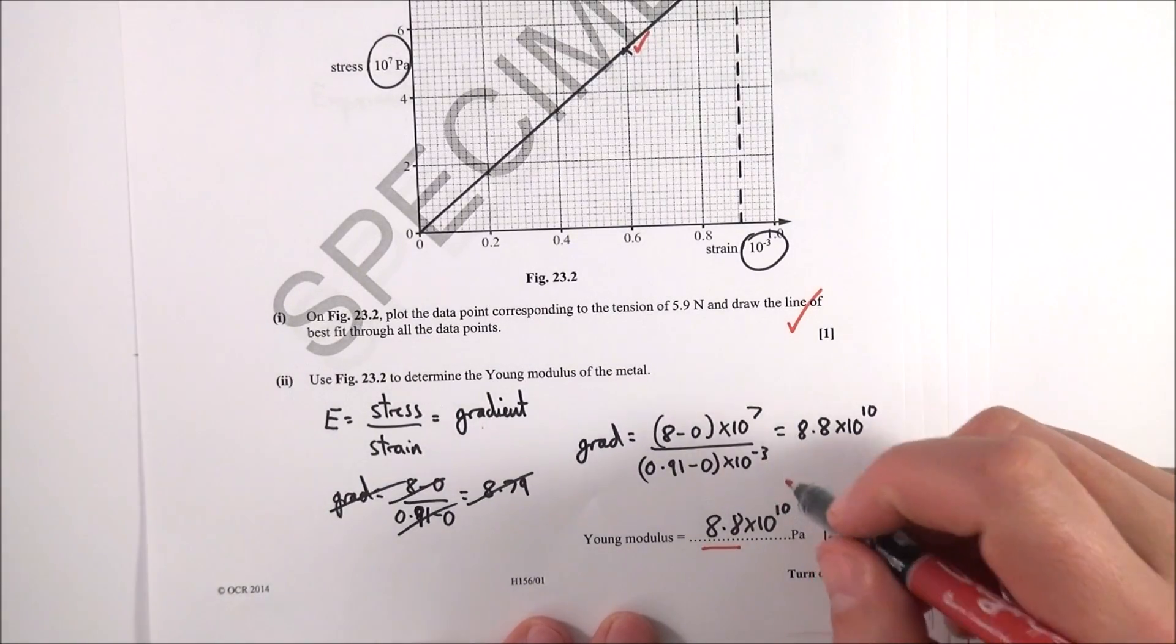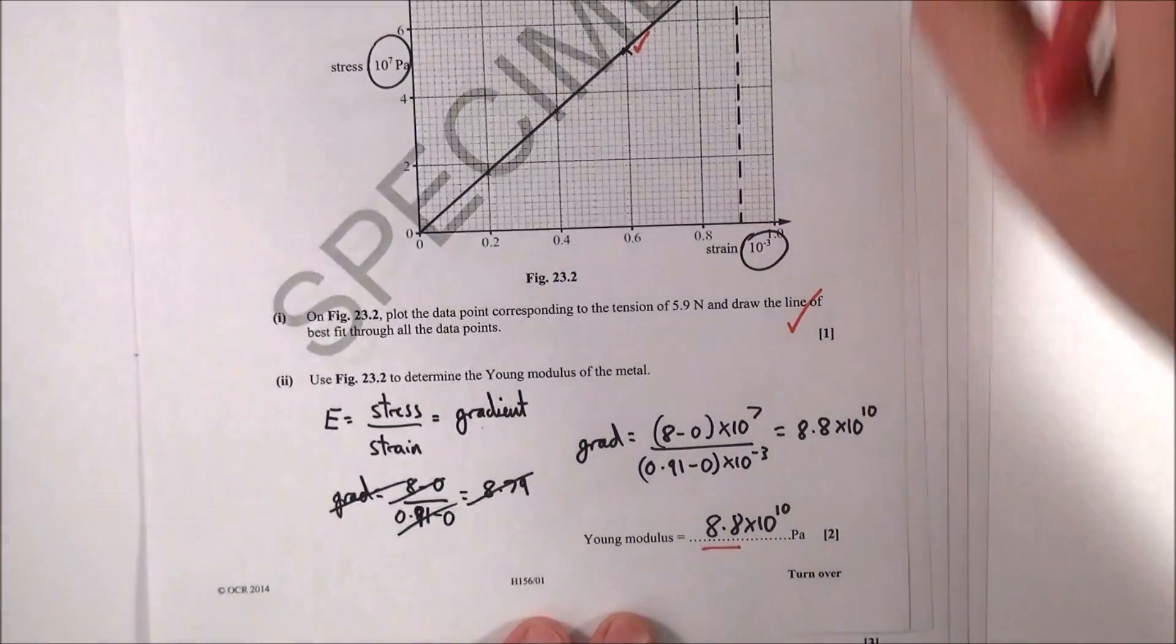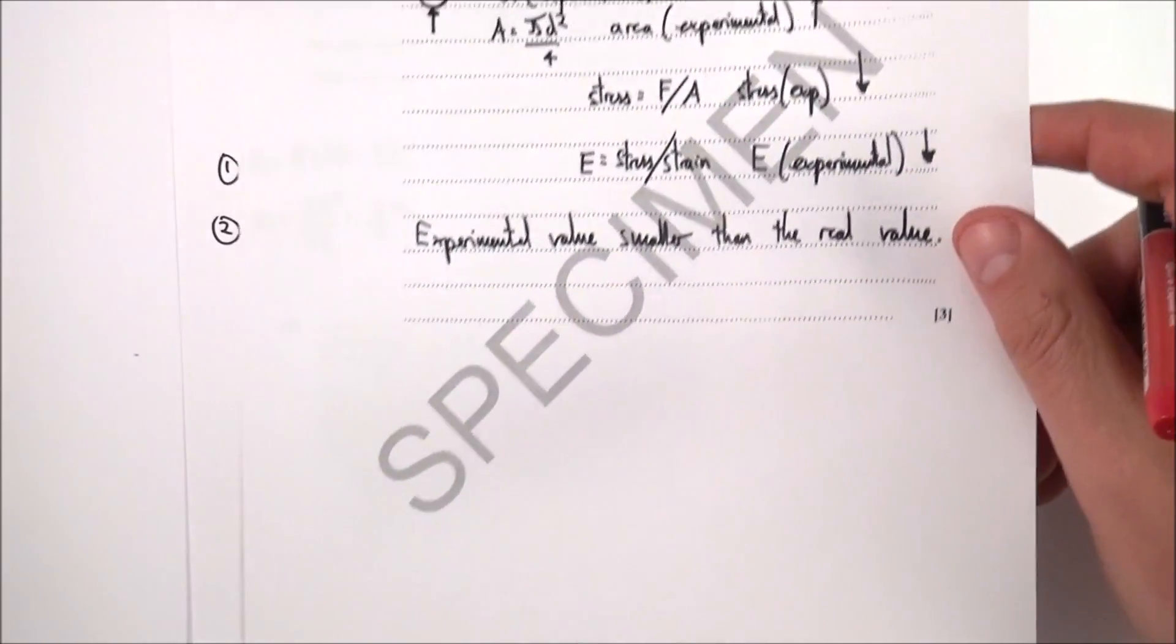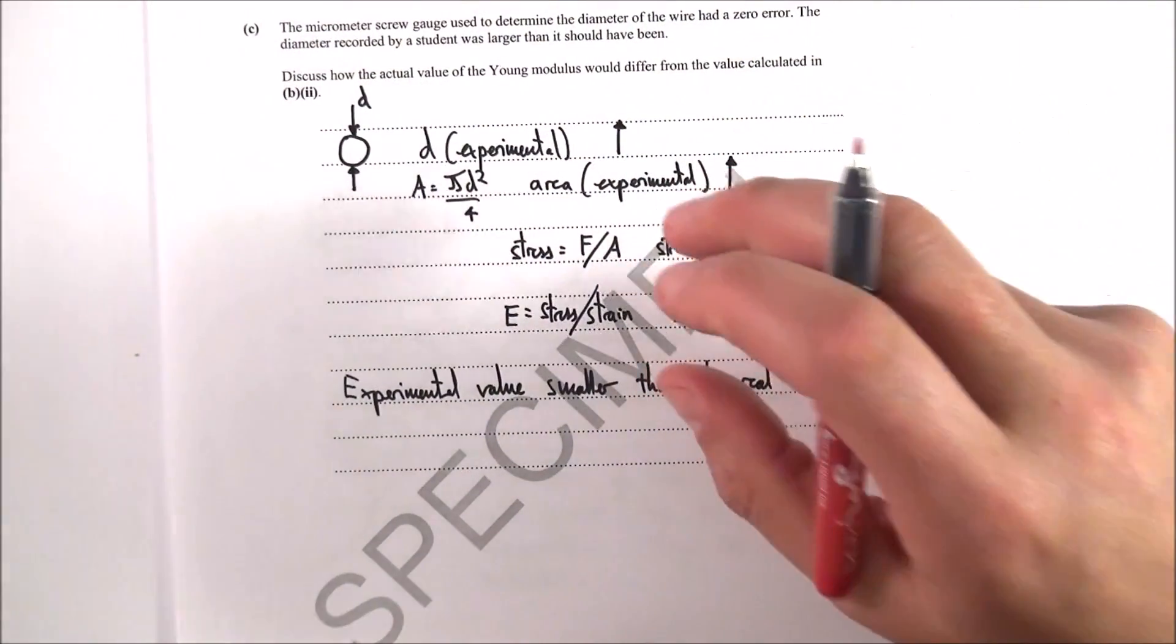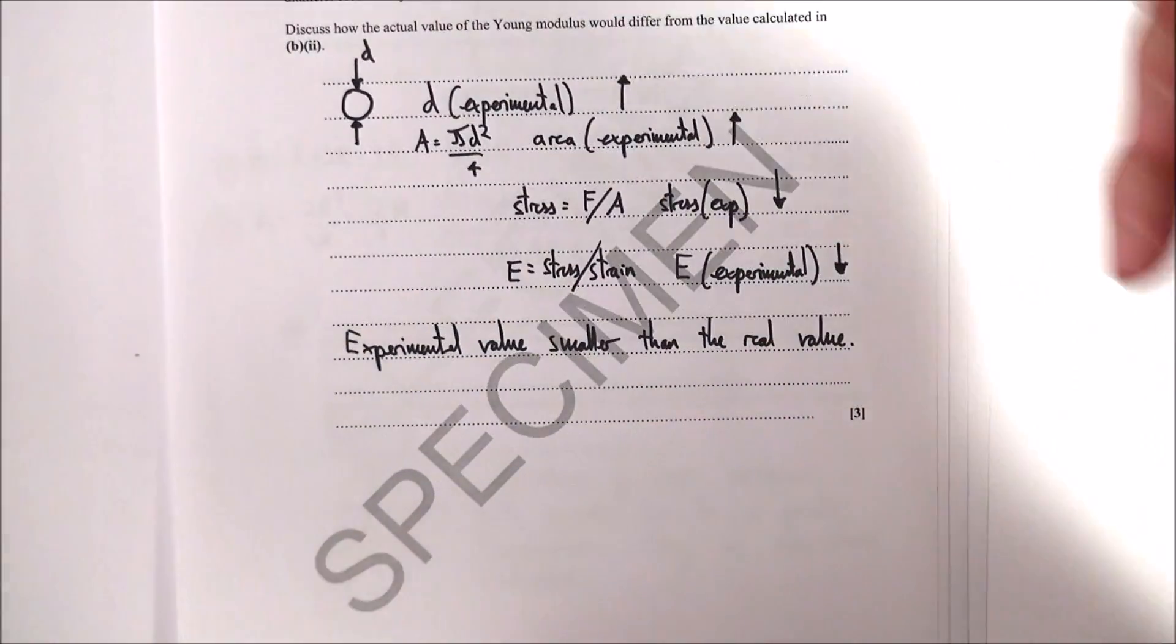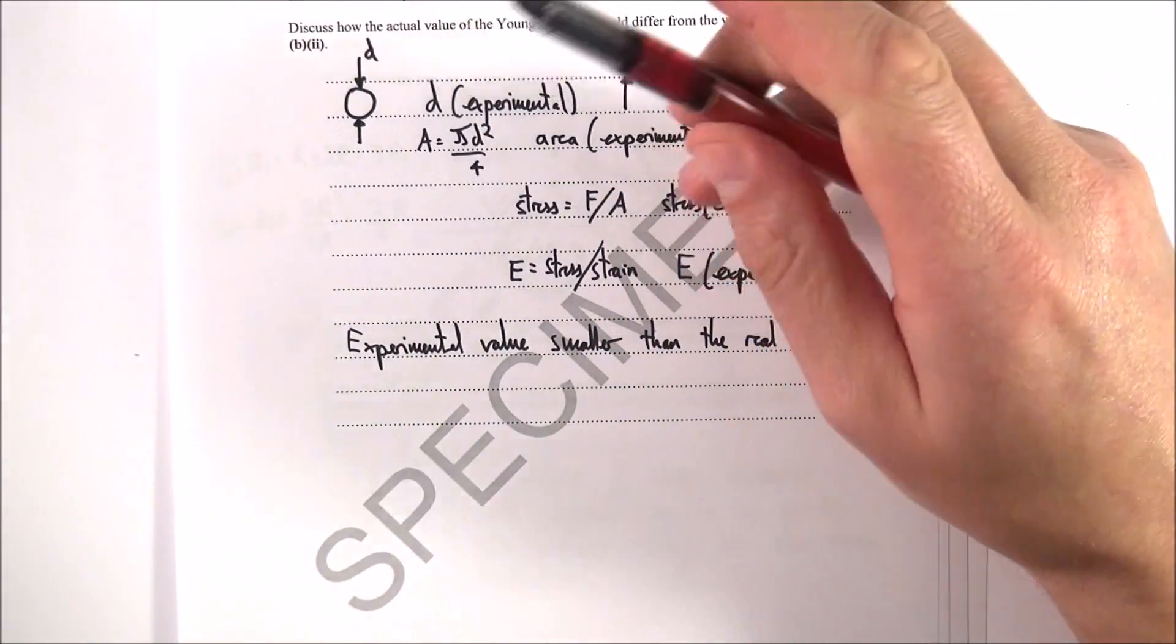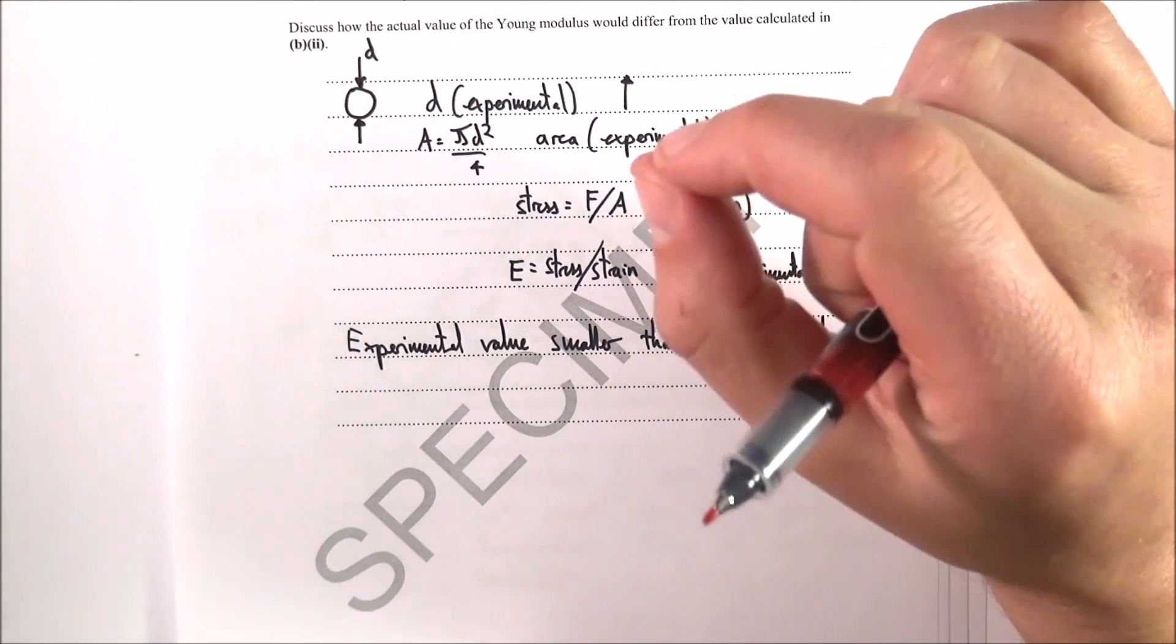We tend to find that the Young's modulus tends to be given in megapascals or often gigapascals. The next part of question 23 was about how you actually do the experiment. This is something you should have done or know about in the course. They said there's been a zero error.